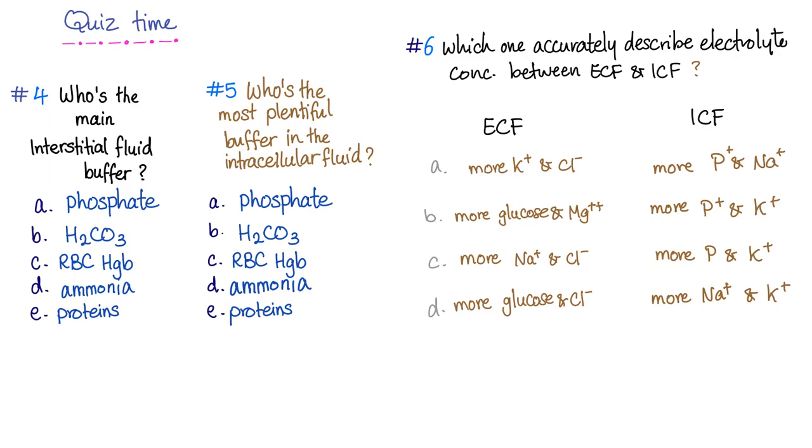So, who's the main interstitial fluid buffer? And the answer is bicarbonic acid bicarbonate system. And as you know, bicarbonate is more common in the extracellular fluid. Who is the most plentiful buffer in the intracellular fluid? And the answer is proteins. They are everywhere inside the cell.